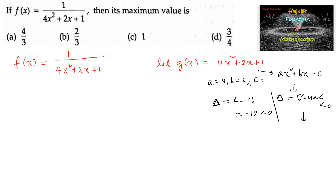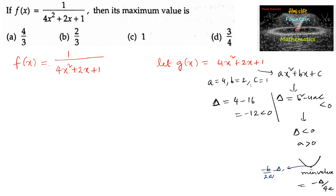We can say that the given expression has no real roots, which implies that when delta is less than 0 and a is positive, the curve will be in the shape of an upward-opening parabola. So it has only a minimum value. That minimum value is given by minus delta by 4a, because the vertex of the parabola is at (−b/2a, −Δ/4a).